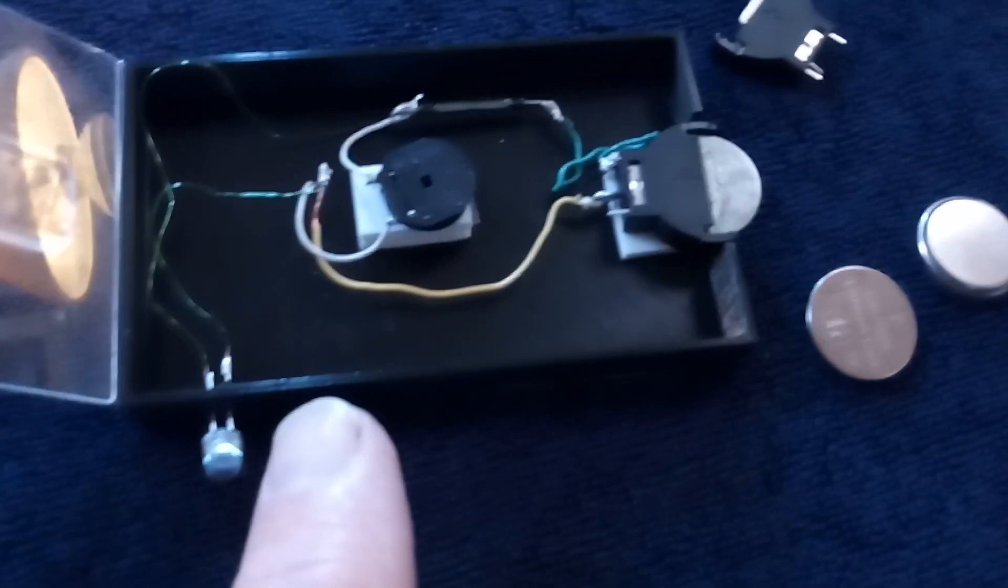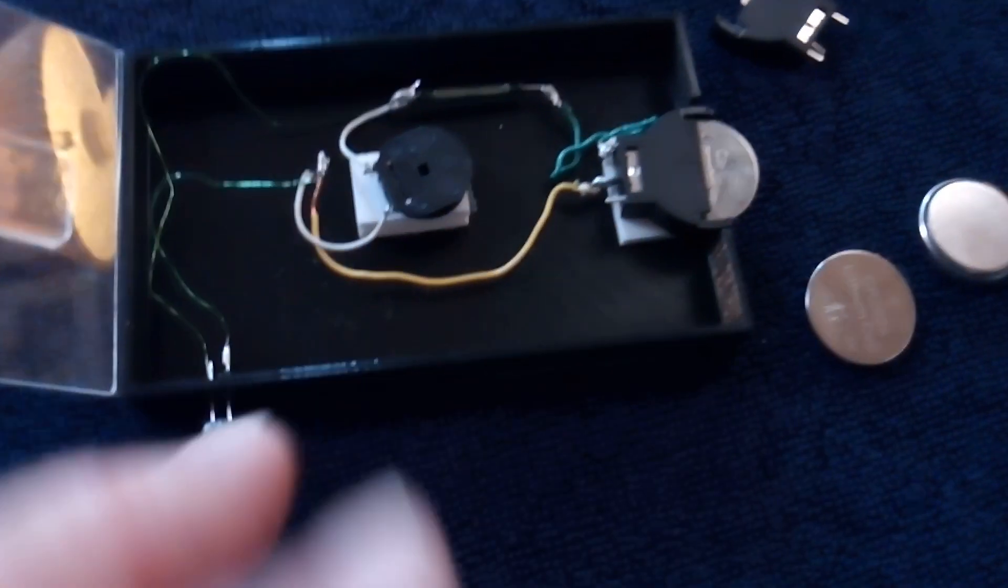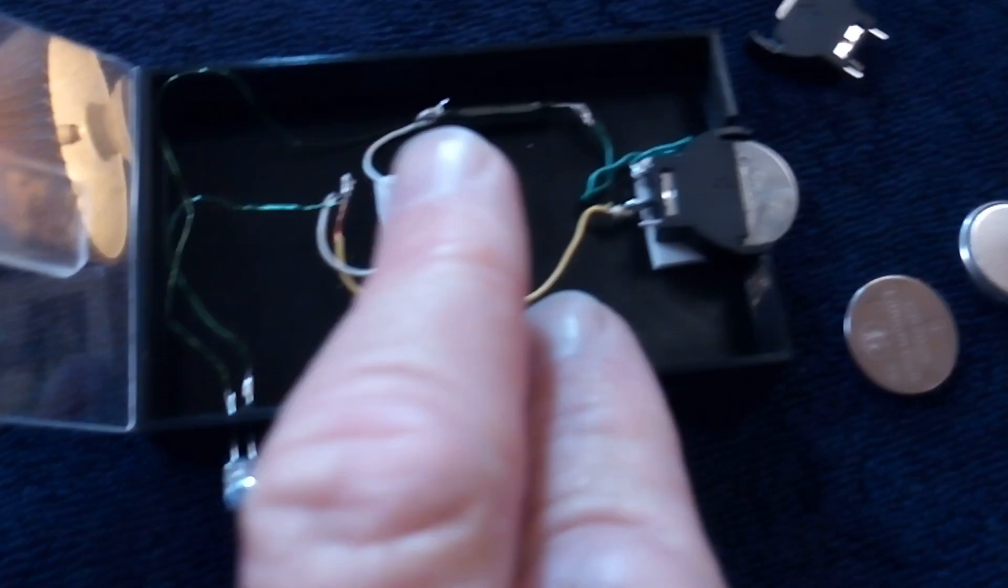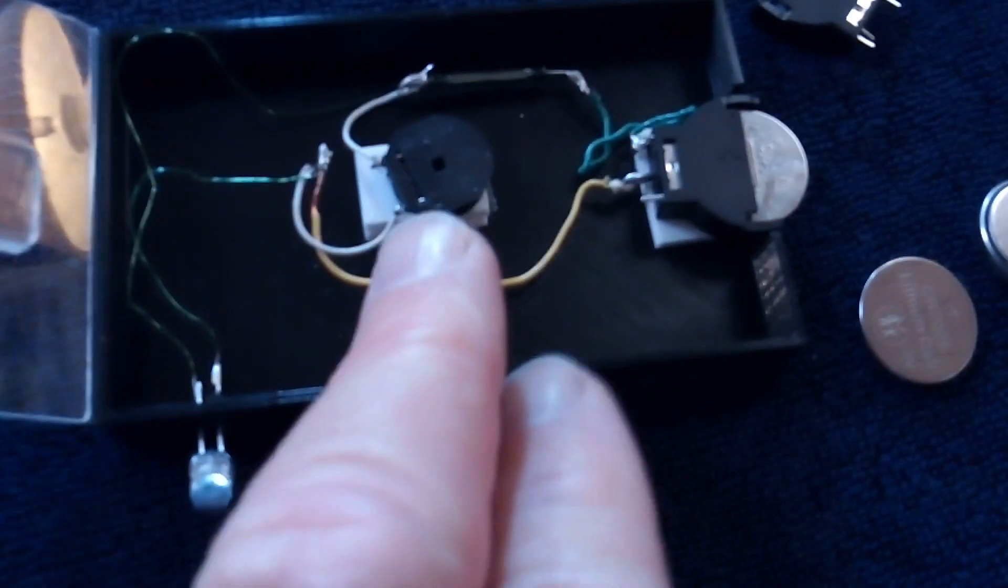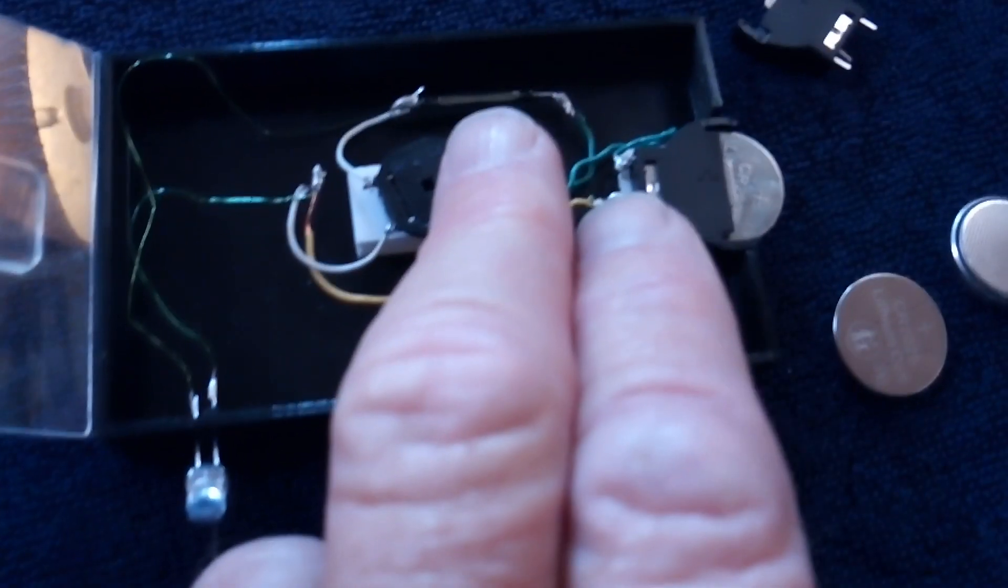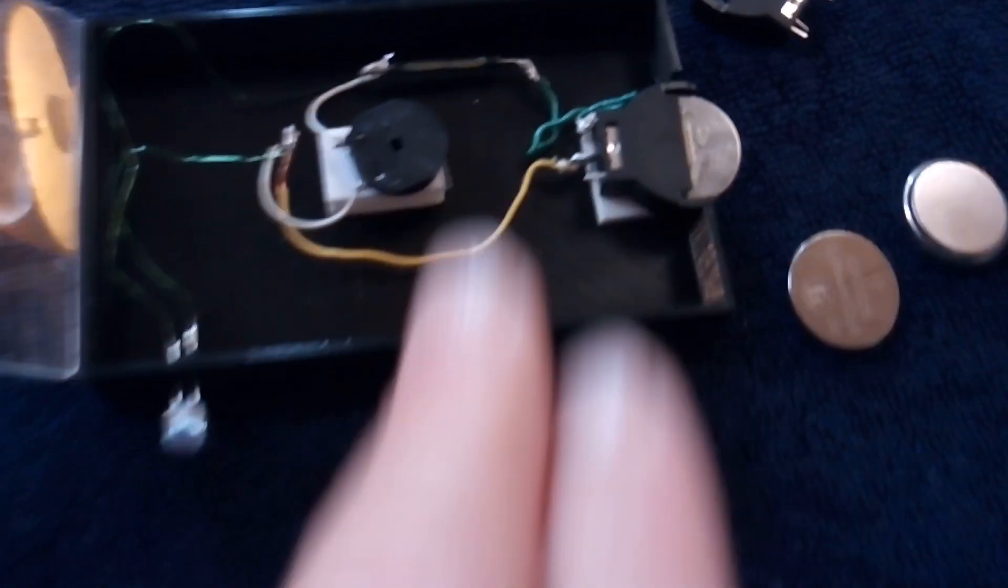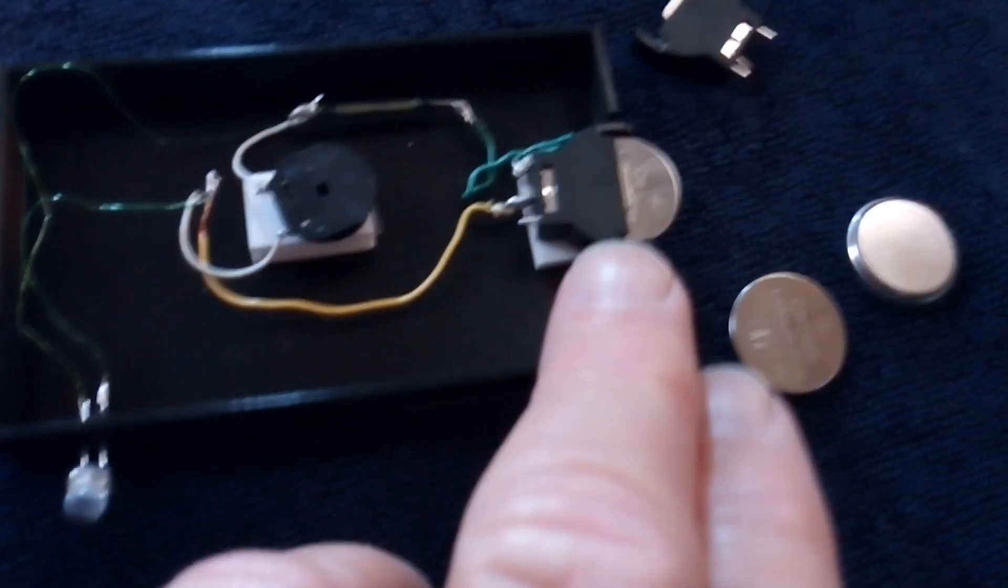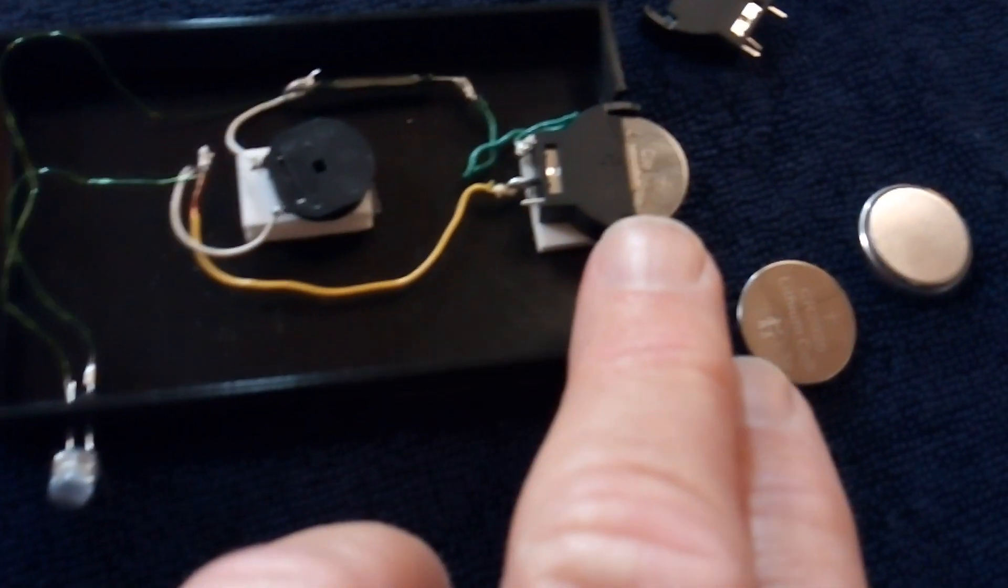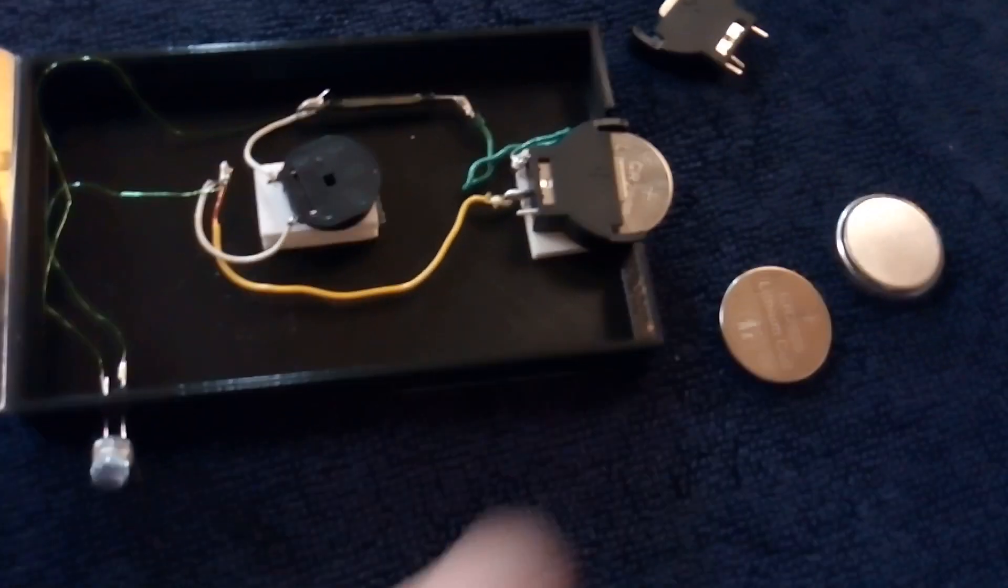If you switch it around, the only time the LED lights is when the field collapses on that coil when the reed switch opens up. So you get a much dimmer light, but it doesn't take any juice out of the battery while it's running the motor, so the battery lasts longer.